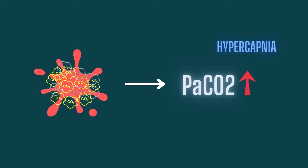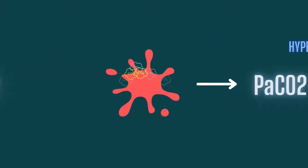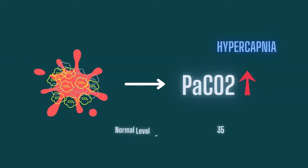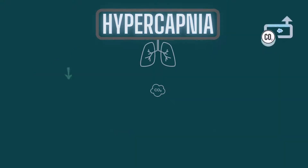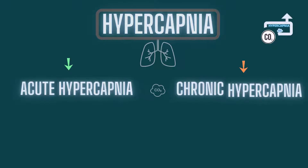So what's normal? In arterial blood, the level of PaCO2 is between 35 to 45 mmHg — anything above that is hypercapnea. It has two types in general: acute and chronic.